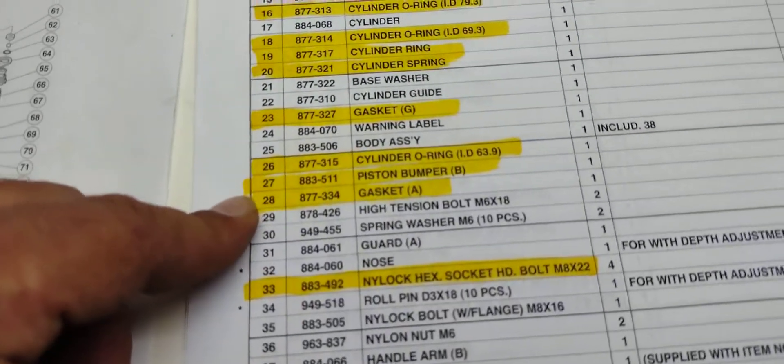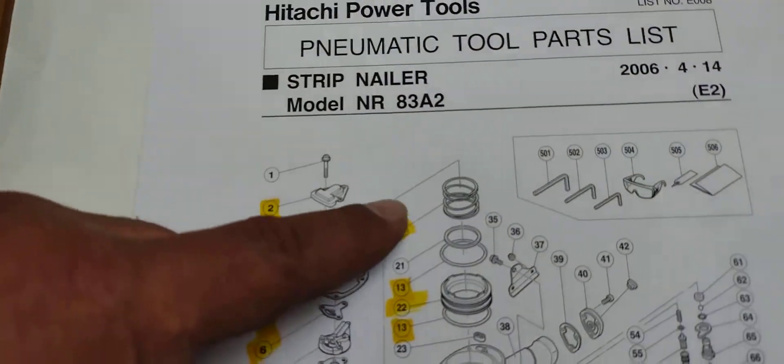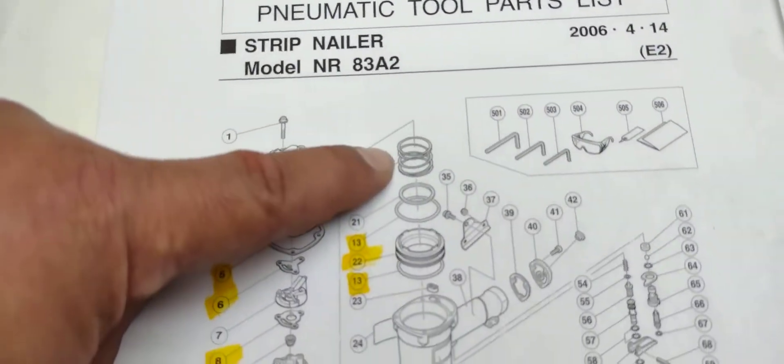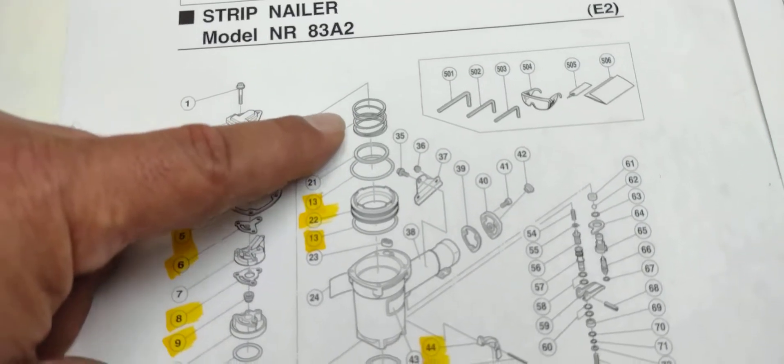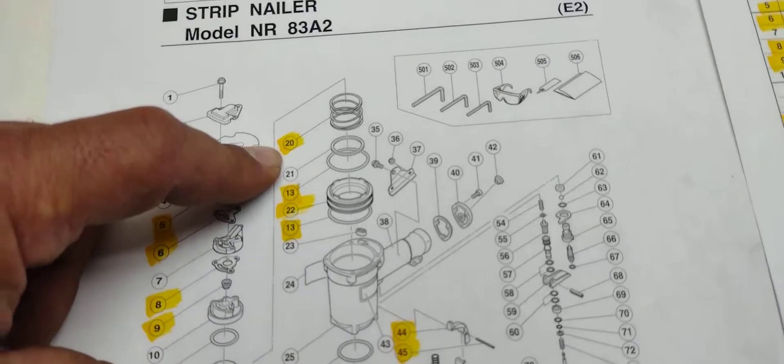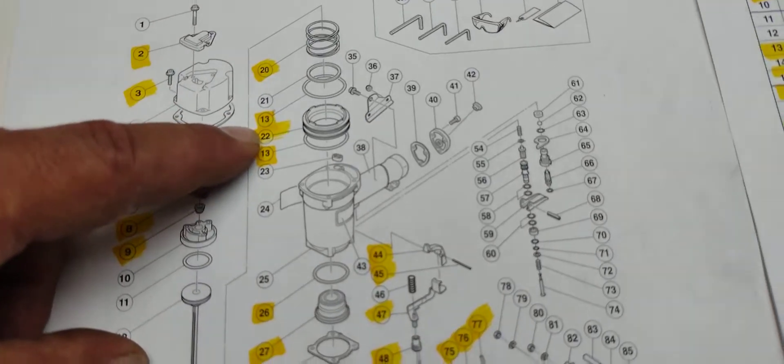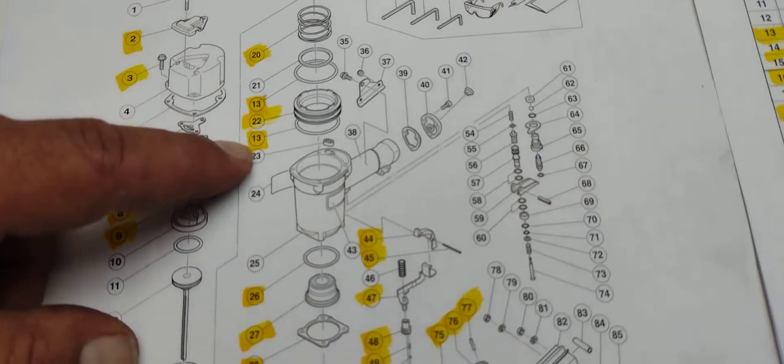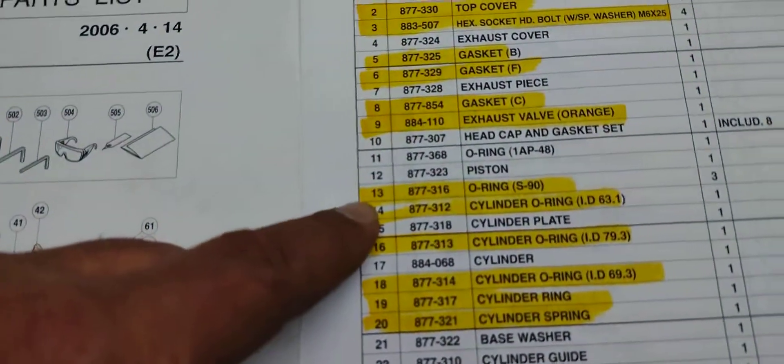This spring, I have never seen it break in the time that I've been fixing this gun, it just ends up missing or broken. I highlight it anyways so you can look at it. We got number 20, number 13, number 22, and number 13 again, which are commonly used.